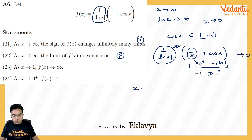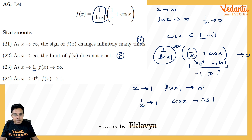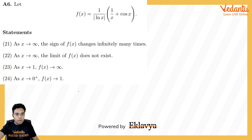Part 23: as x → 1, ln x → 0 so 1/|ln x| → +∞. Meanwhile 1/x → 1 and cos x → cos(1), both finite. So the bracket inside is finite but 1/|ln x| → +∞. Finite times infinity is infinity, so f(x) → ∞. This is true.